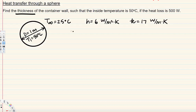In this case we can use the equation: q-dot, the heat transfer rate, is equal to delta T divided by R-total. Inside we are going to have conduction and outside we are going to have convection, so these are the two resistances we need.